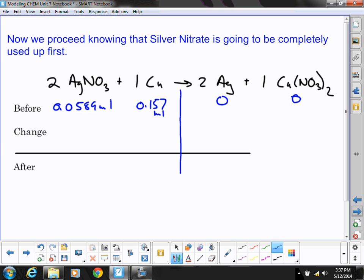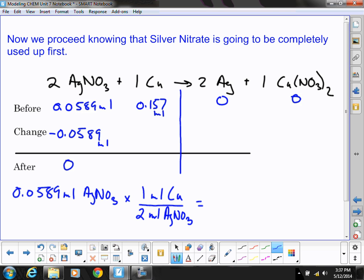All right. Well, this time we're going to use the silver nitrate as our starting spot. Have that completely go to zero. Now let's see what we get. 0.0589 moles of AgNO3 times 1 mole of Cu over 2 moles of AgNO3. And so how much copper metal is required to completely react all of that? 0.0589 times 1 mole of Cu divided by 2 moles of silver nitrate and I get 0.0295 moles of Cu.